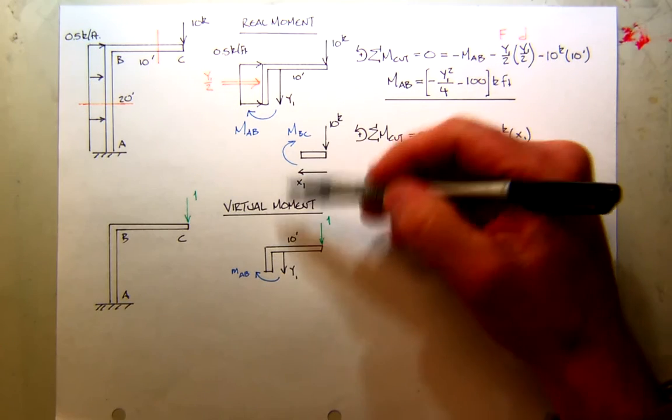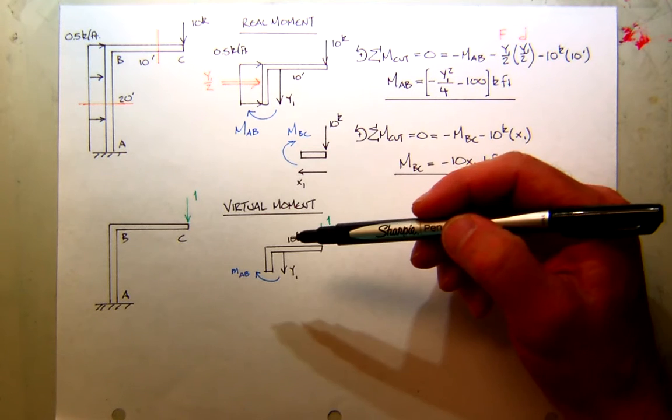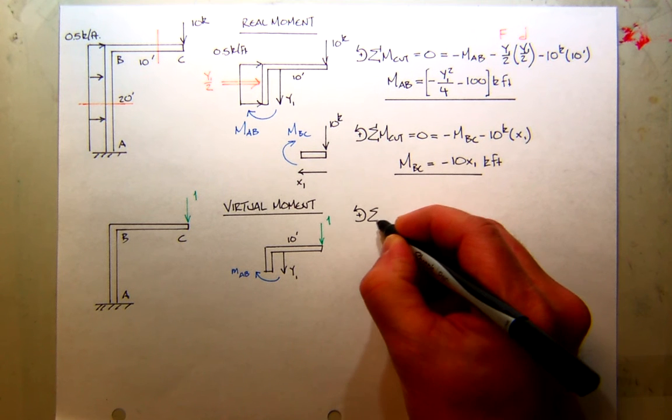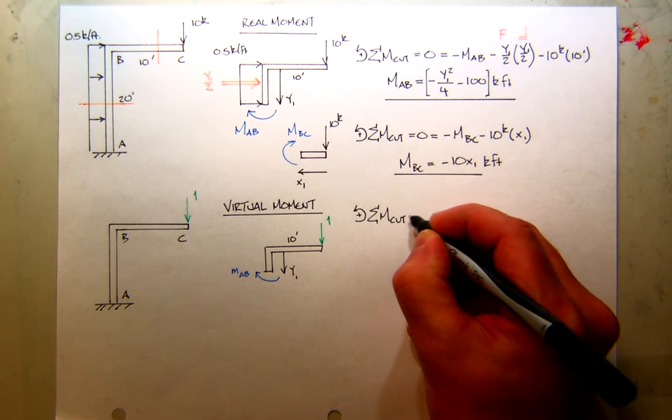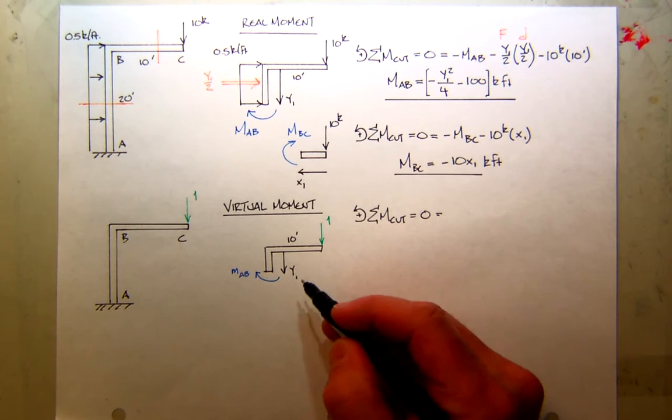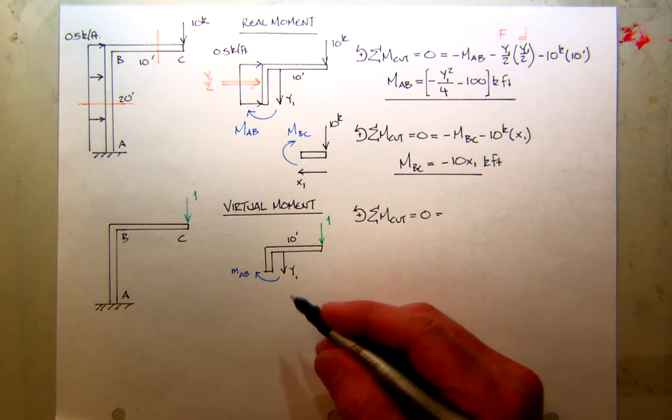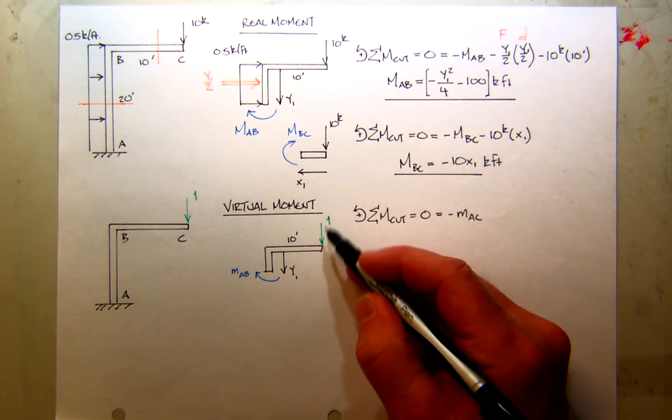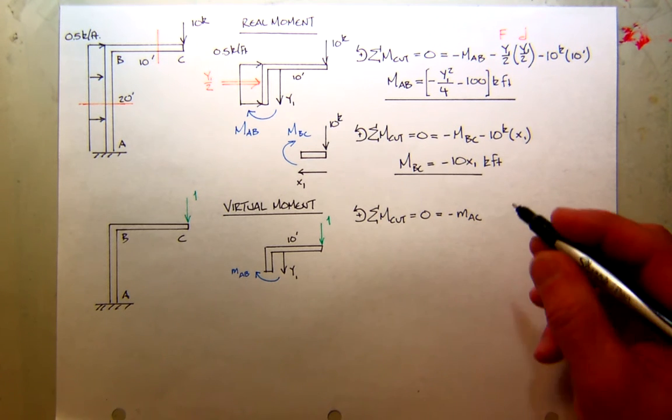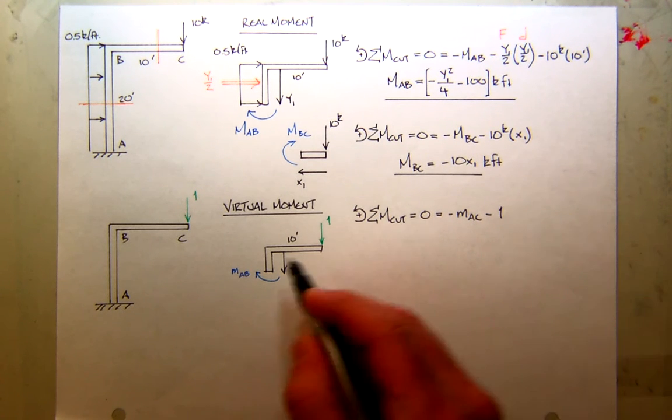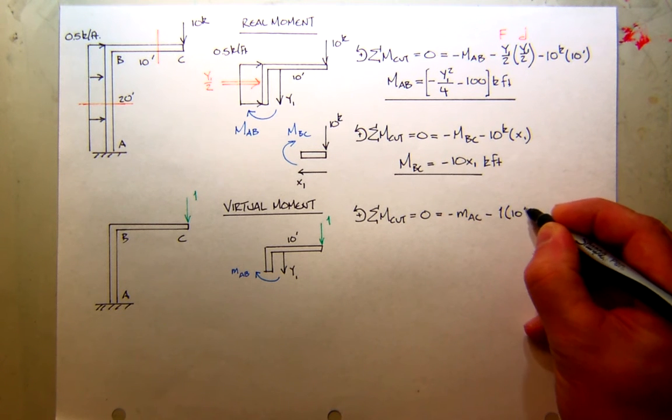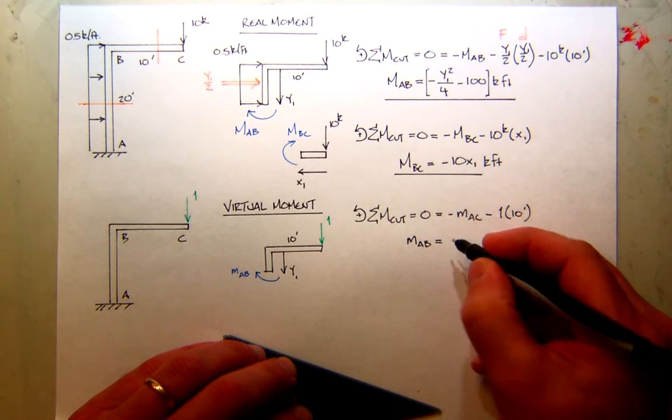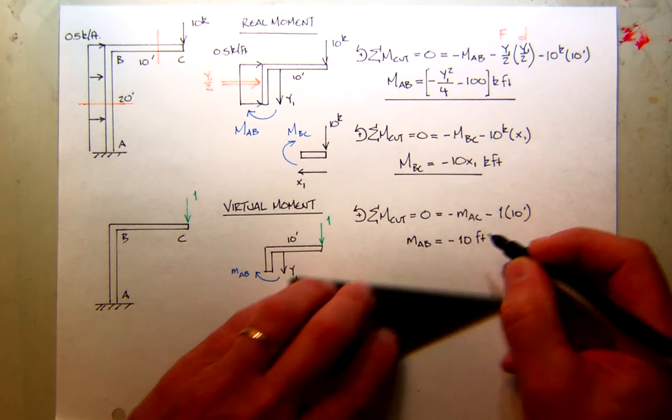So now I can sum the moments there. Summing the moments of this little cut section, using right-handed rule for my sign. Well, this moment is negative. The virtual load out here is creating what kind of moment about the cut? Also negative. It has a value of 1, and what's its moment arm? 10. So you can see that's a pretty easy equation to solve. So the virtual moment in AB is simply going to be minus 10. It has odd units just called feet.